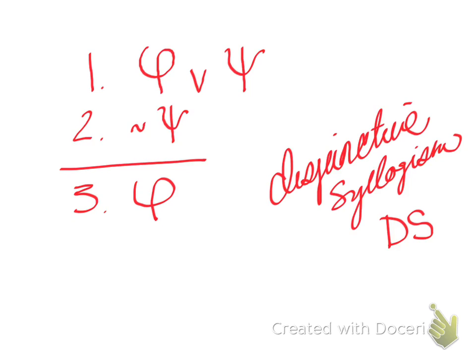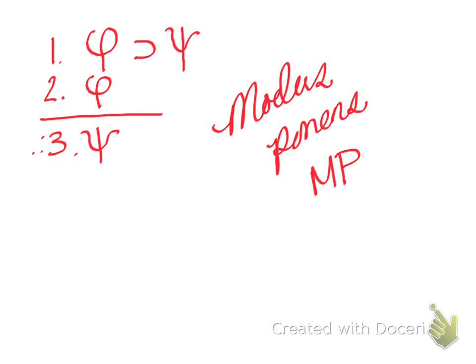Okay. Now that we have looked at two patterns of reasoning, two argument forms, that we know to be valid, and we could do truth tables to prove it, instead of doing a truth table every time we see something that has this pattern, we'll just know it's valid. We'll have a rule that says, whenever you see an argument with this pattern, you know it's valid.